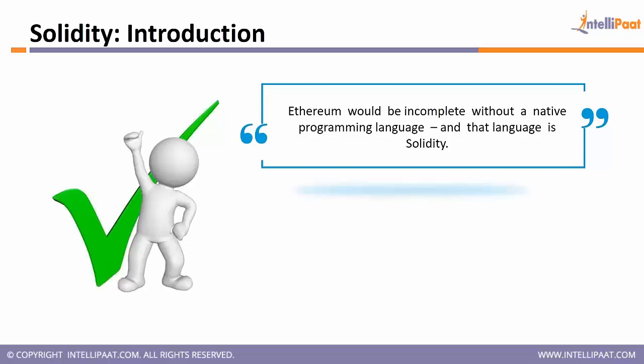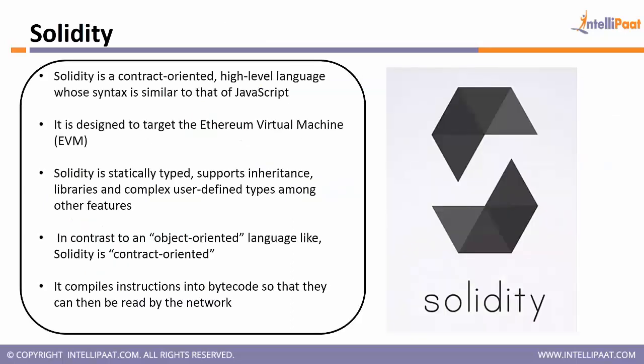Solidity is a contract-oriented language. In object-oriented languages like Java and C++ we talk about classes and objects, but in Solidity what we talk about is contracts and functions. It is a synonym for a class and a method — like a class has a lot of methods, similarly you write a contract and the contract will have a lot of functions.